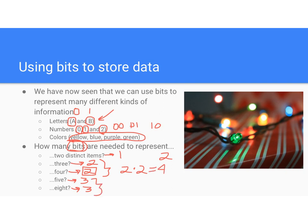With three bits, you have three light switches. The first can be on or off, the second can be on or off, the third can be on or off — that's two states times two states times two states, which is two to the third, or eight distinct items that you can represent with three bits.